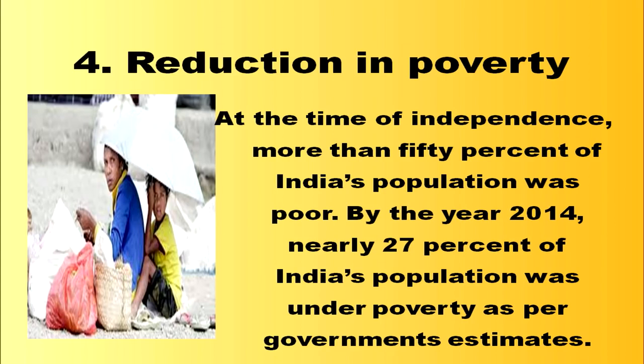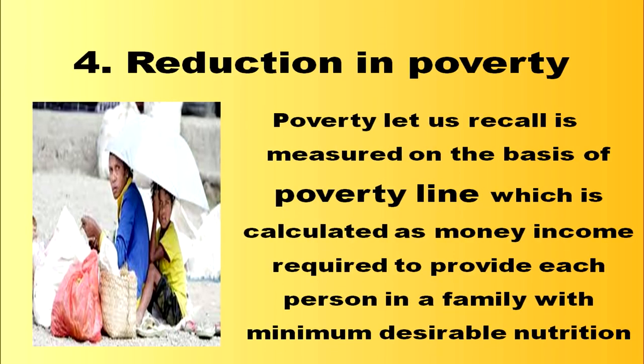The fourth objective is reduction in poverty. At the time of independence, more than 50 percent of India's population was poor. By 2014, nearly 27 percent was under poverty as per government estimates. Poverty is measured on the basis of the poverty line, which is calculated as the money income required to provide each person with minimum desirable nutrition. The nutrition standard has been fixed at 2400 kilocalories in rural areas and 2100 kilocalories in urban areas.